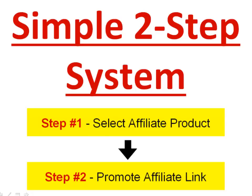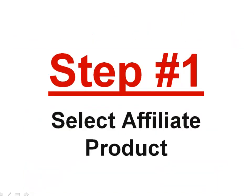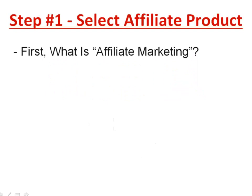This is about a simple two-step system: step one, select an affiliate product, and step two, promote your affiliate link. We're going right into step number one — how you can select an affiliate product. Affiliate marketing is simply a business model where you partner with another merchant or vendor, use their products and market them, and they pay you a commission. This is perhaps the easiest business model ever to start earning cash.